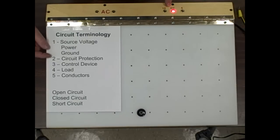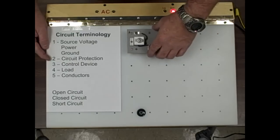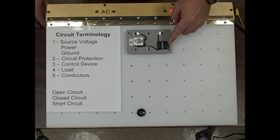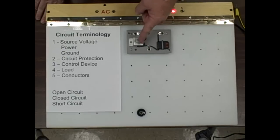Then we need circuit protection and a control device and so we'll use module A which includes an automotive style blade fuse which will be circuit protection and a simple on-off toggle switch which we use to control our load.